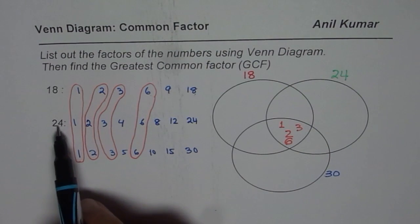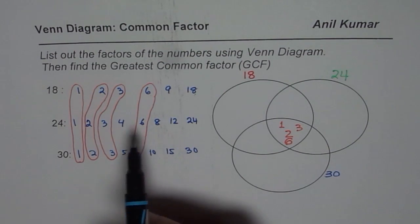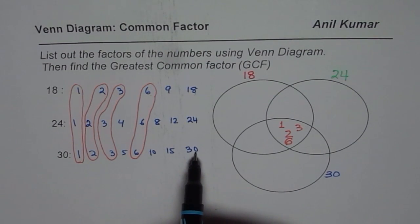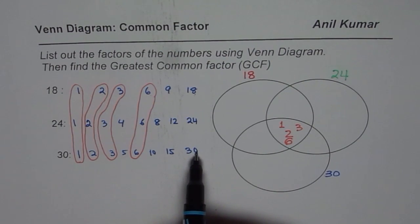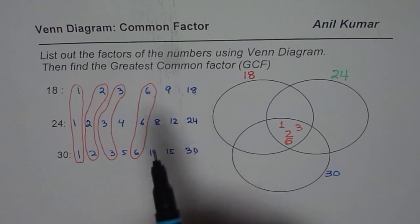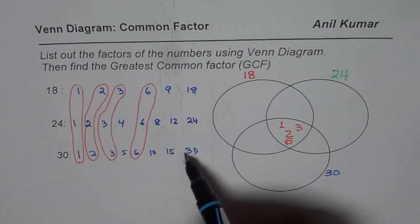Let us see between 24 and 30. So between 24 and 30 also we do not find any other common factor.